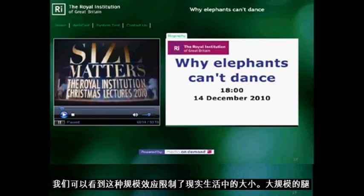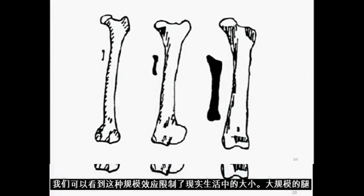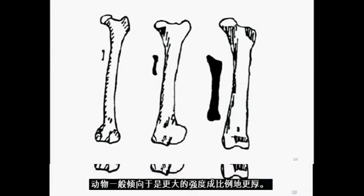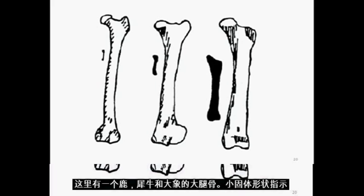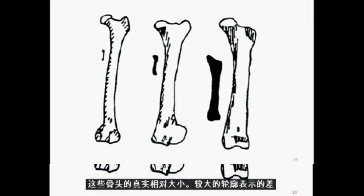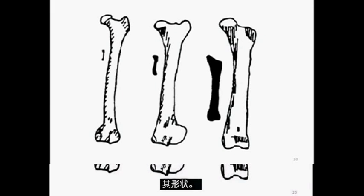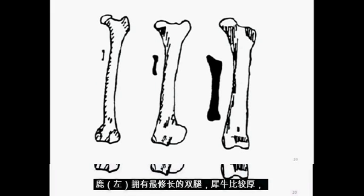We can see the scale effects limiting the size of real life. The legs of large-scale animals generally tend to be proportionally thicker for greater strength. Here is the thigh bone of a deer, a rhinoceros, and an elephant. The small solid shapes indicate the true relative size of these bones, while the larger outline indicates the difference in their shape. The deer on the left has the most slender legs, the rhinoceros relatively thicker, and the elephant has great thick sturdy bones to support its massive bulk.